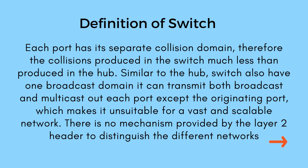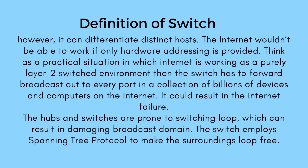Each port has its own separate collision domain, so collisions produced in a switch are much less than those produced in a hub. Similar to the hub, a switch also has one broadcast domain. It can transmit both broadcast and multicast out each port except the originating port, which makes it unsuitable for a vast and scalable network. There is no mechanism provided by the layer 2 header to distinguish different networks, though it can differentiate distinct hosts.